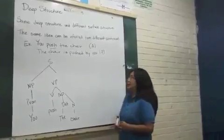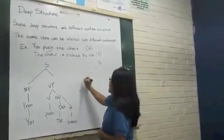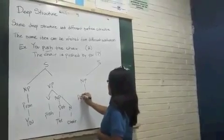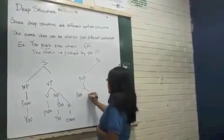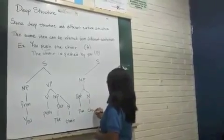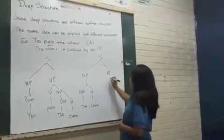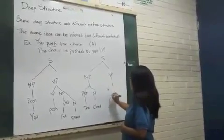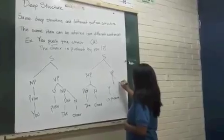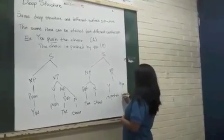The chair is pushed by you. Again, we start with the sentence which is the whole sentence. We start with the noun phrase, which in this case we just have the determiner D and we have a noun. In this case D and chair. We also have the verb phrase, which is composed by the verb is push and the pronoun, which in this case is by you.